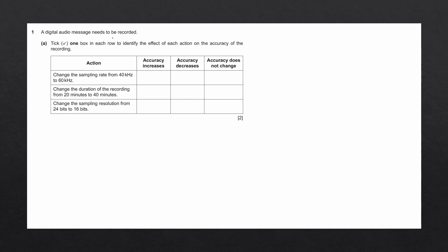A digital audio message needs to be recorded. Tick one box in each row to identify the effect of each action on the accuracy of the recording.